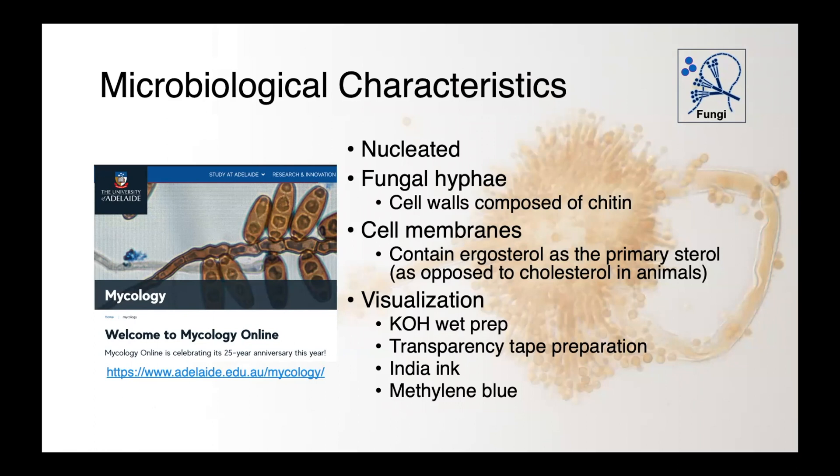Generally speaking, we can think of our fungi as being nucleated. They are eukaryotes — they possess a nucleus and membrane-bound organelles. They have fungal hyphae with cell walls composed of chitin. This differentiates them from bacteria, where we have a peptidoglycan-composed cell wall. They have cell membranes which contain ergosterol as the primary sterol, as opposed to cholesterol, which we see in animals.